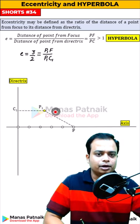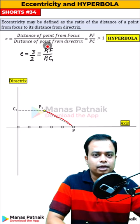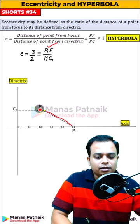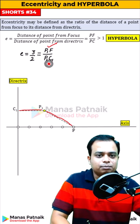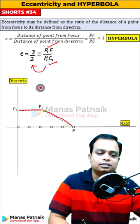Let me mark a point. The distance from the focus, that is P1F, and the point's distance from the directrix, that is P1C1. Plug those values in — you are going to get the result as 3 by 2.